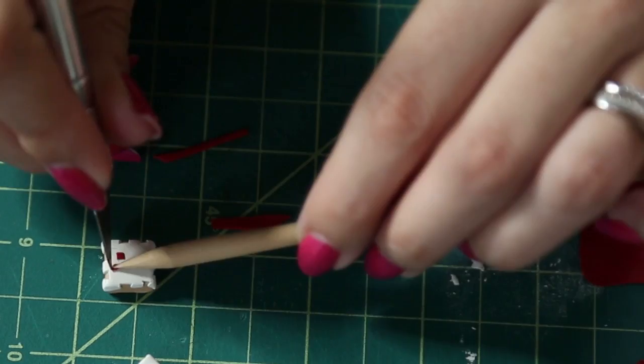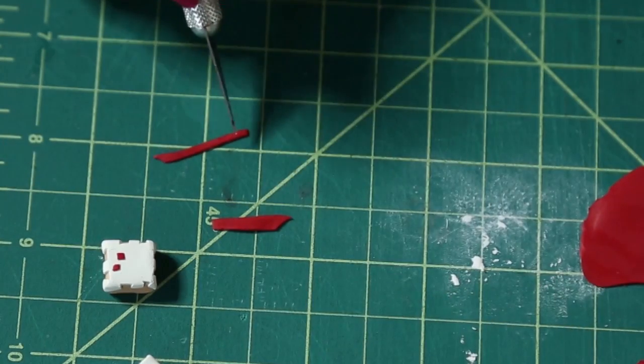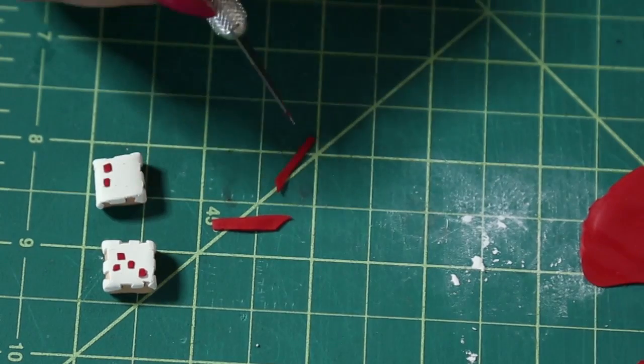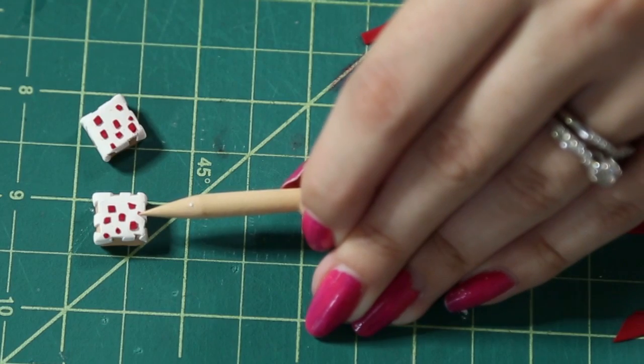But cut out tiny little squares and use another utensil to help you press it down because they're way too small to push down with your fingers.